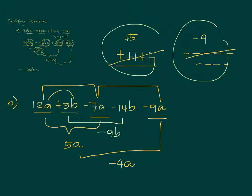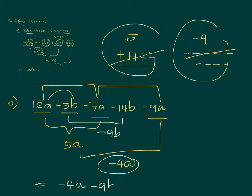Let's summarize the results: all the a's became negative 4a, and the b's became negative 9b. That is correct.